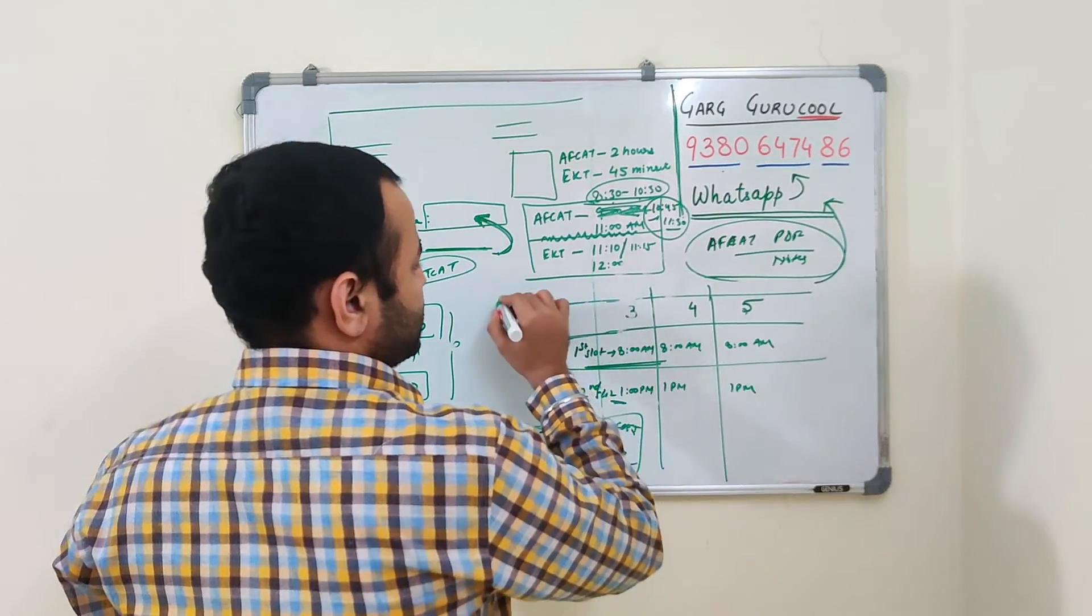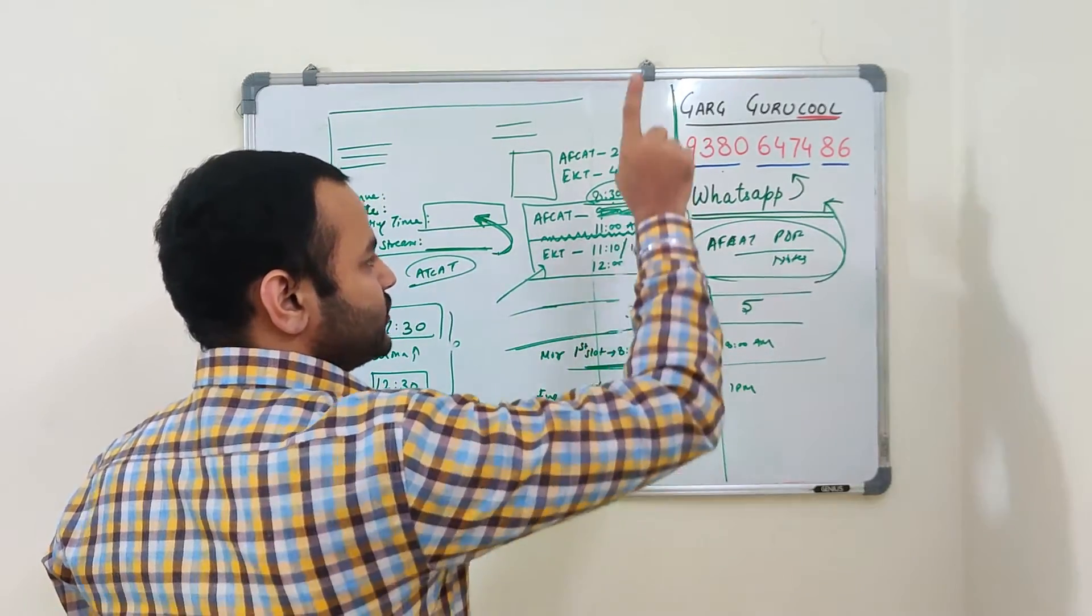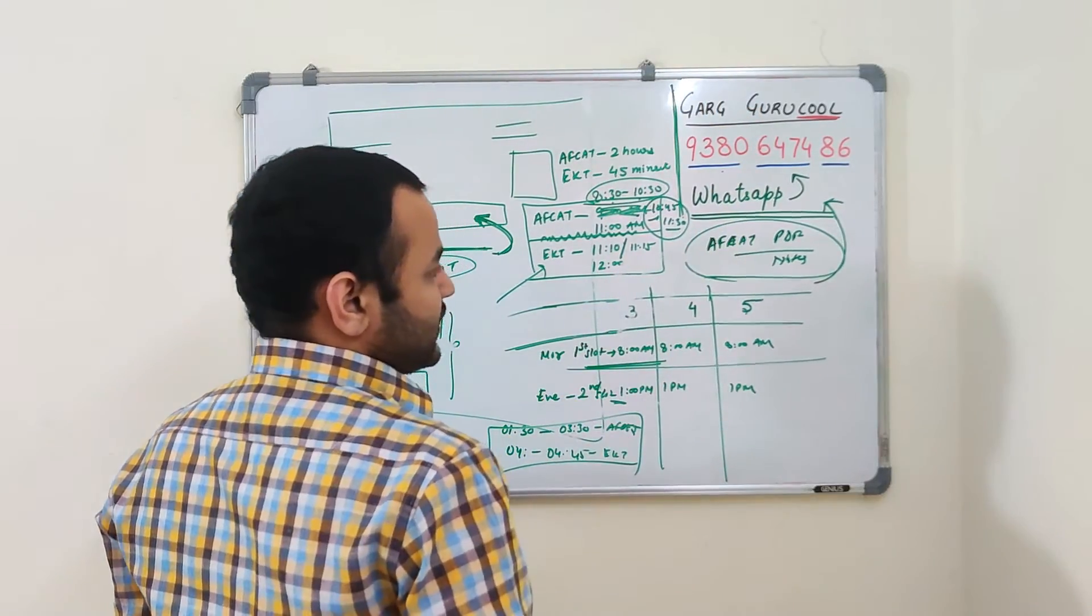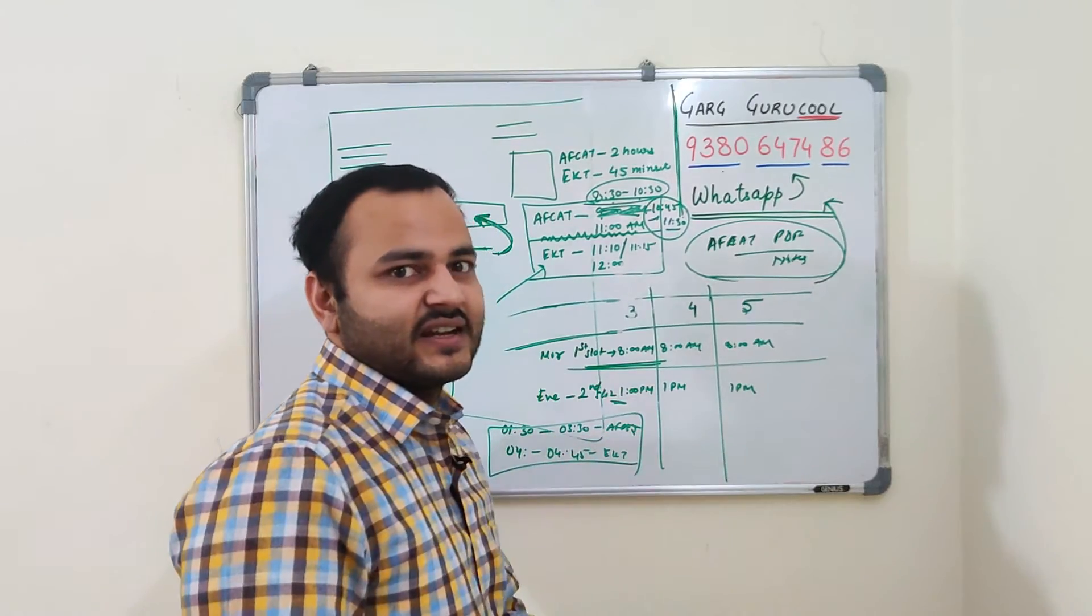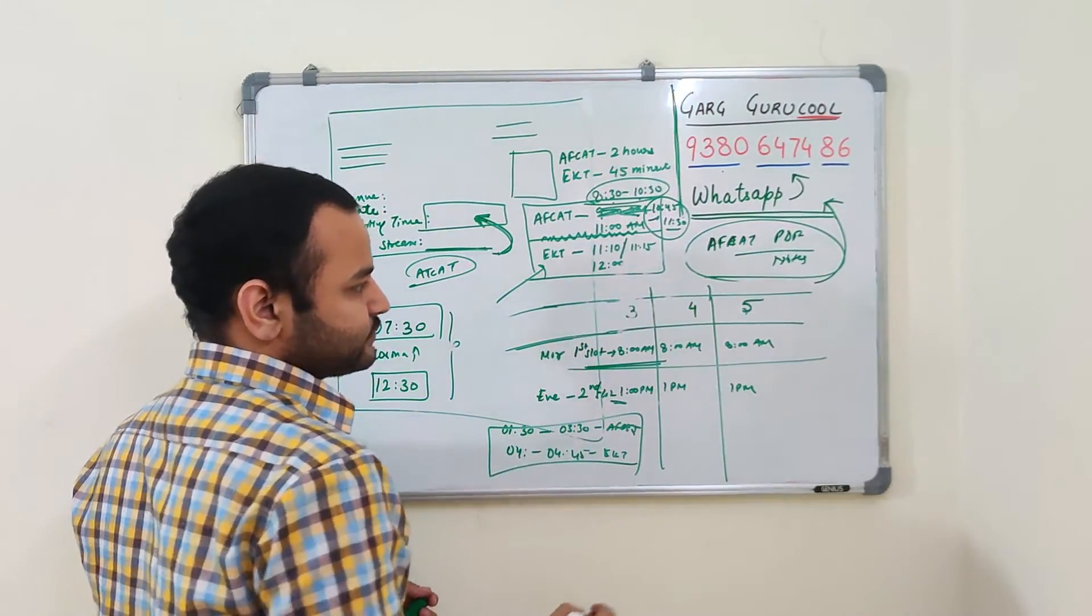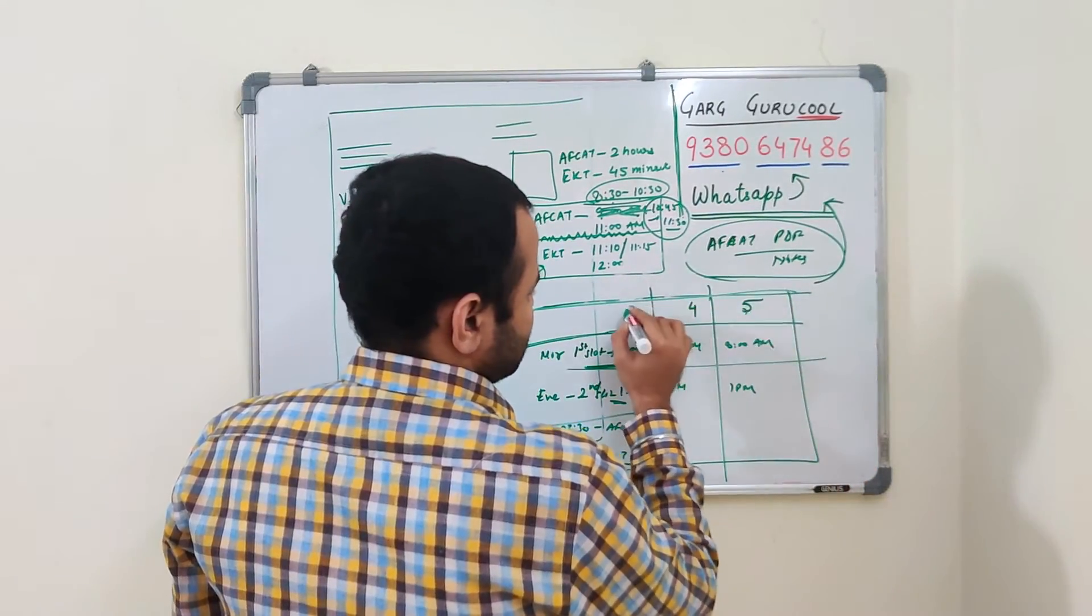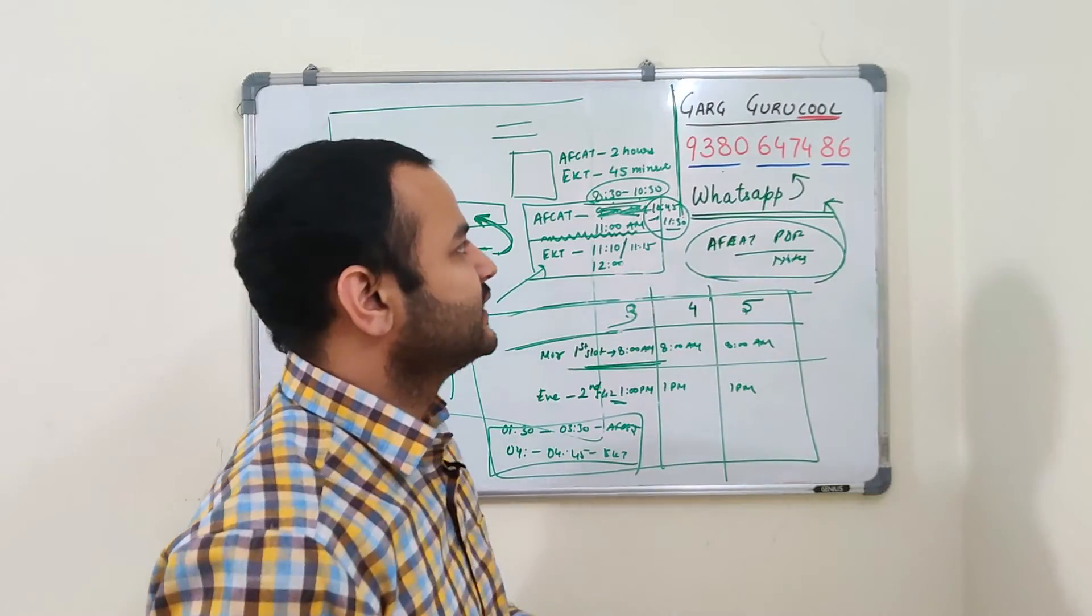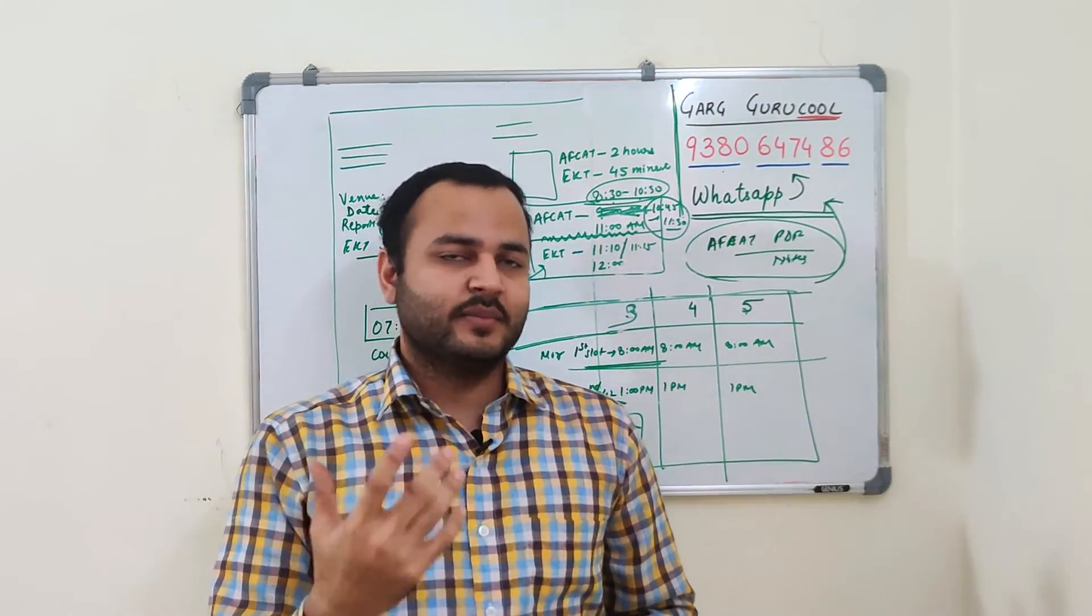Now EKT will only happen for those who have filled it. If you have doubts, there is a very detailed separate video. Click on that button and you will get it. If you have EKT, if you clear EKT, if you don't clear the EKT and you clear the AFCAT, will you get the SSB code? All the doubts are clear in that video. I think the doubt is very clear that when the AFCAT exam will be conducted and when the EKT will be conducted.